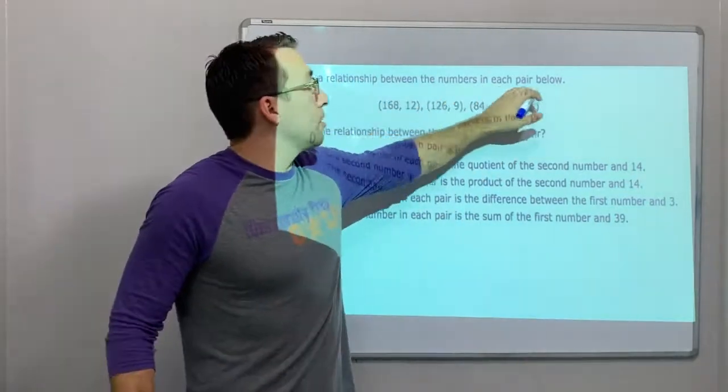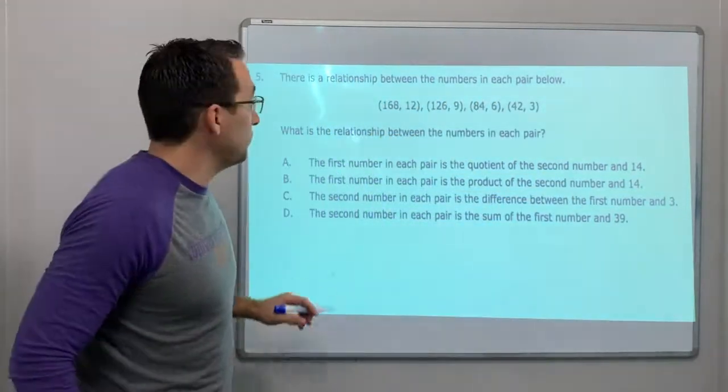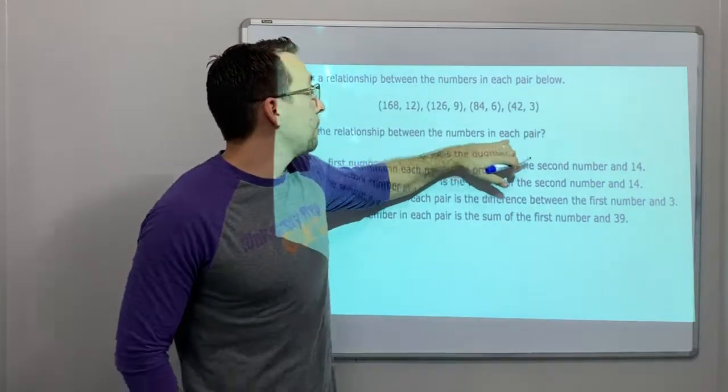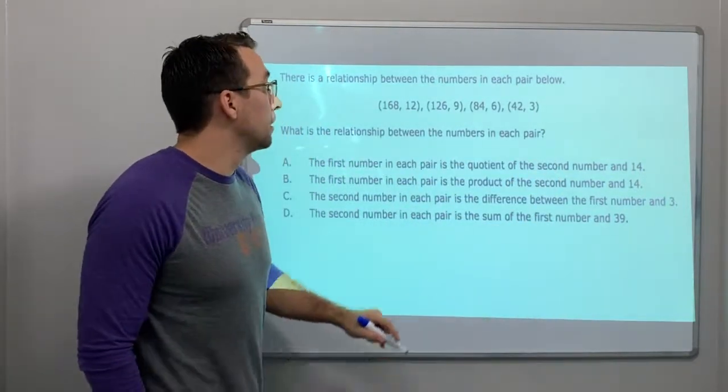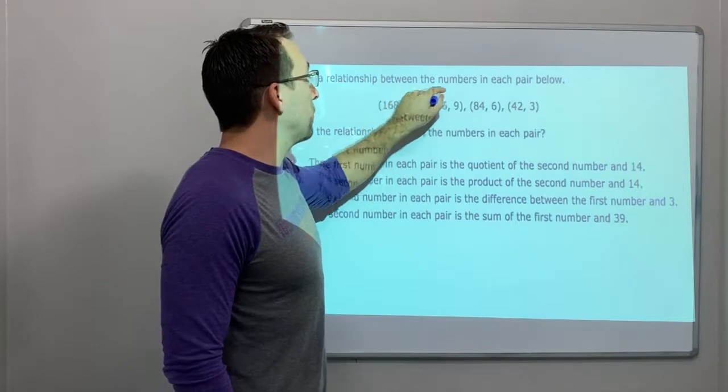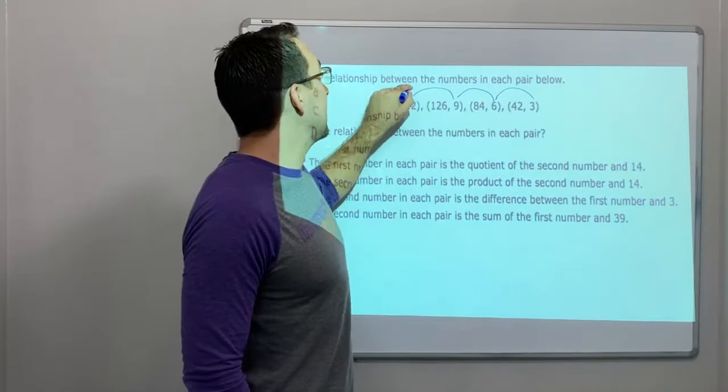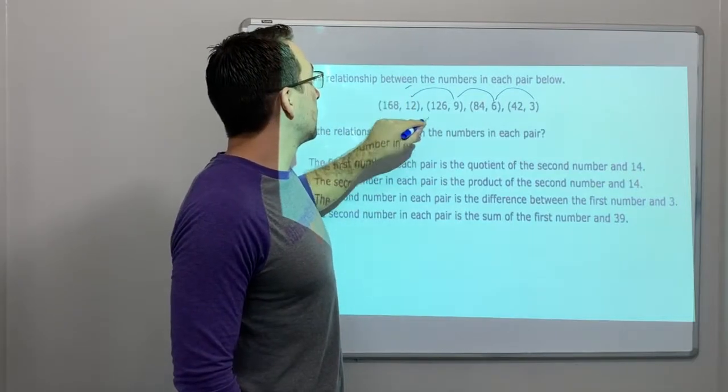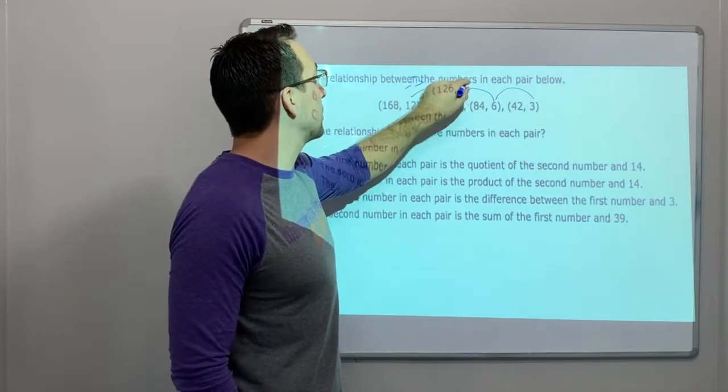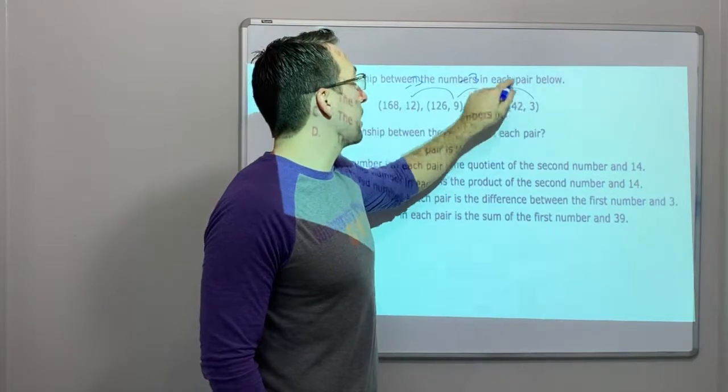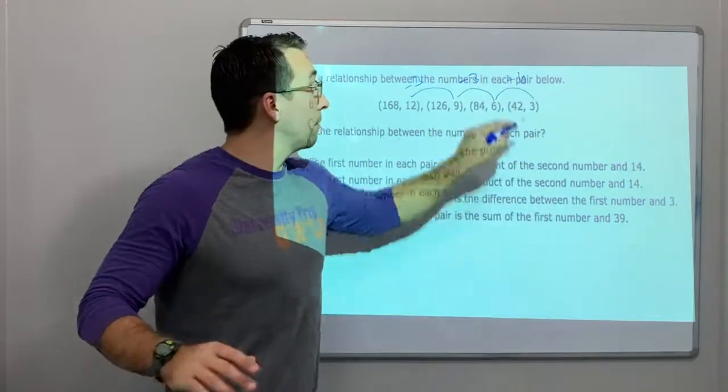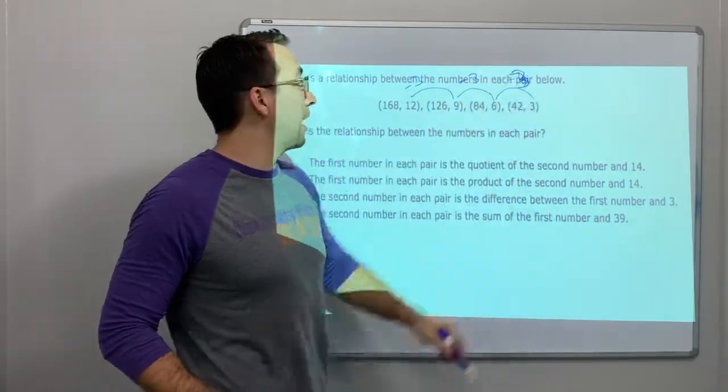There is a relationship between the numbers in each pair below. What is the relationship between the numbers in each pair? Well, let's look at it. 12 to 9, 9 to 3, 6 to 3. Look, that is minus 3. 9 minus 3, 6 minus 3. That's minus 3. That's the first pattern I saw.